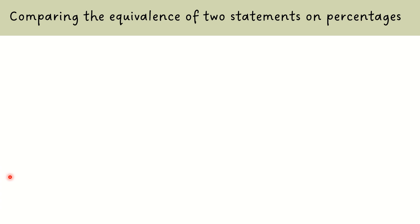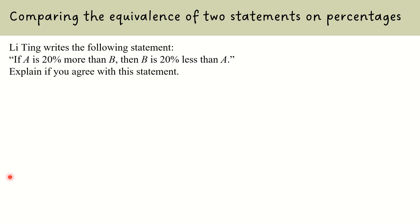In our last example for the first section on percentage, we look at comparing the equivalence of two statements on percentages. Li Qing writes: if A is 20% more than B, then B is 20% less than A. What do you think about this statement? Explain whether you agree with it or not.